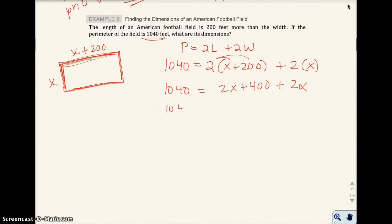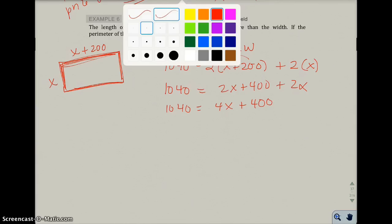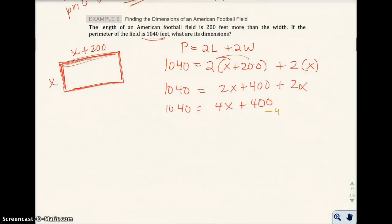On the right-hand side, I can combine these two like terms. So I have 4x plus 400, and I'm going to have to subtract 400 from both sides to get x alone on the right-hand side. So 1,040 minus 400 is 640. That equals 4x.